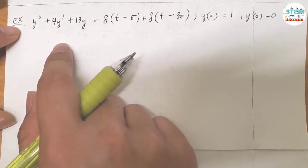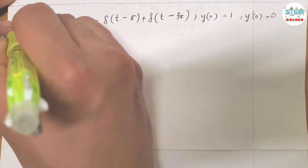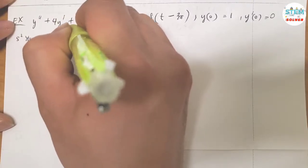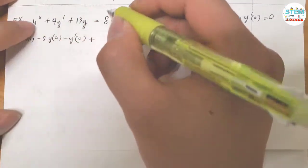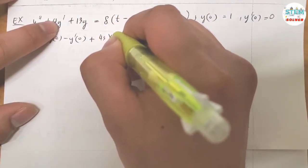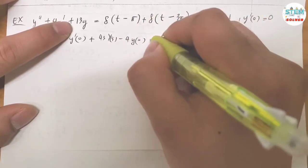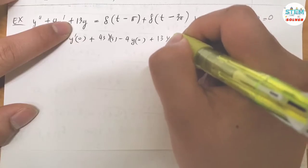On the left side, apply the derivative theorem. I have S squared capital Y of S minus S Y of 0 minus Y prime of 0, plus for this one 4S capital Y of S minus 4Y of 0, plus 13 capital Y of S equals...